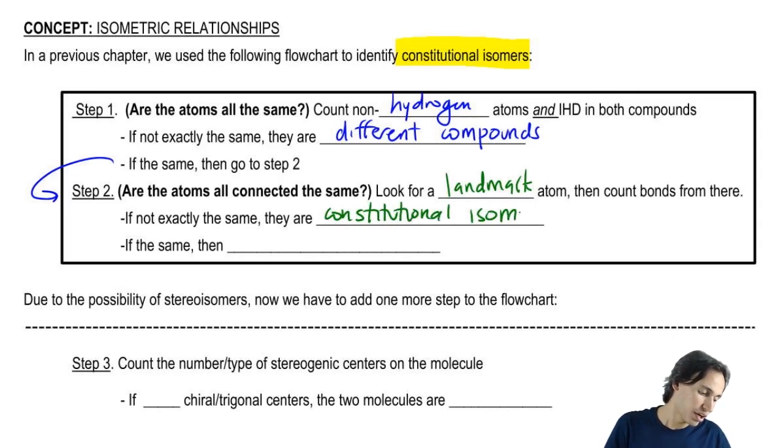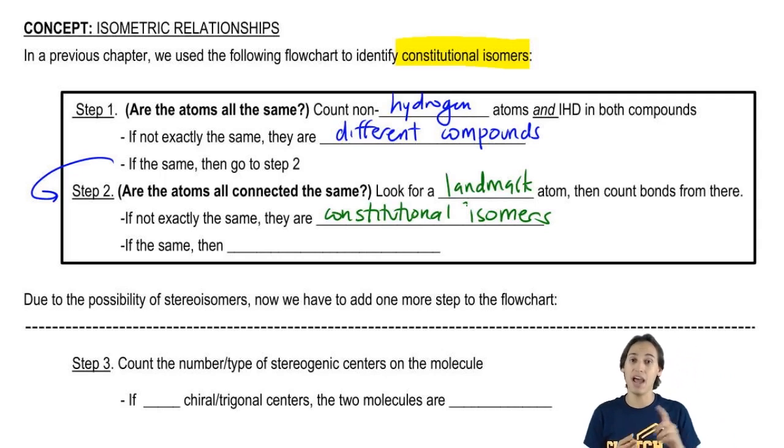And then we said if they were, we said back then that if they had the same atoms and if they were connected the same, then we were going to say that they were identical. So usually, when we were talking about constitutional isomers, we would have put identical in this blank.